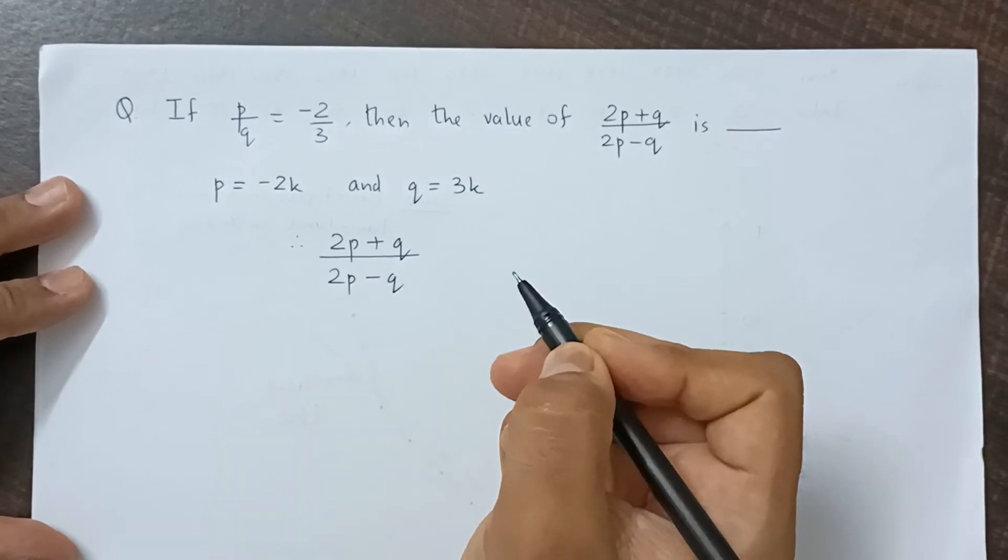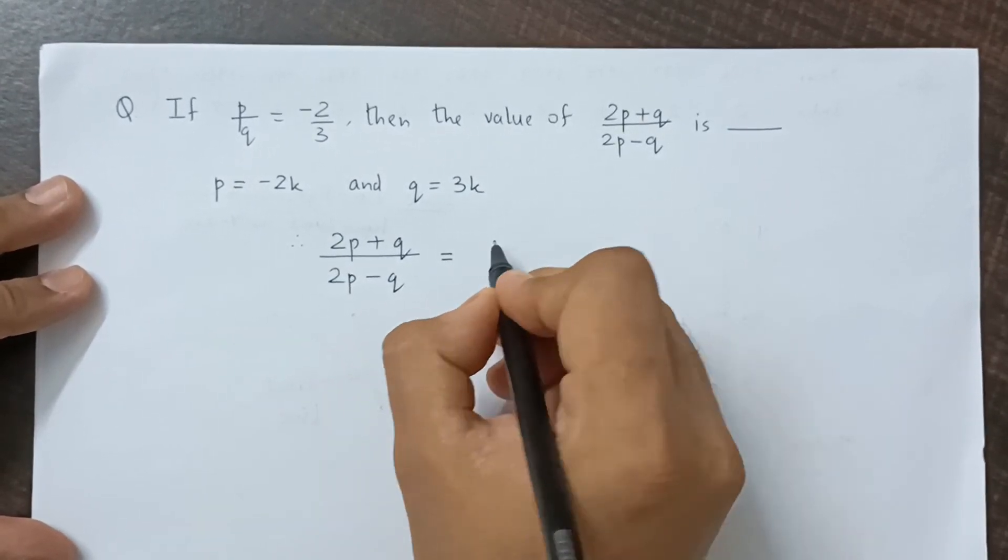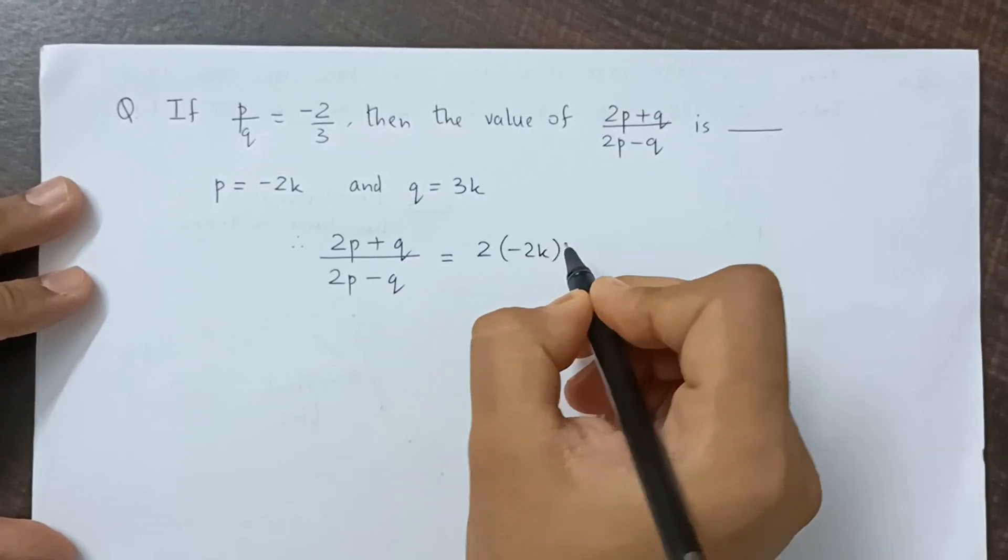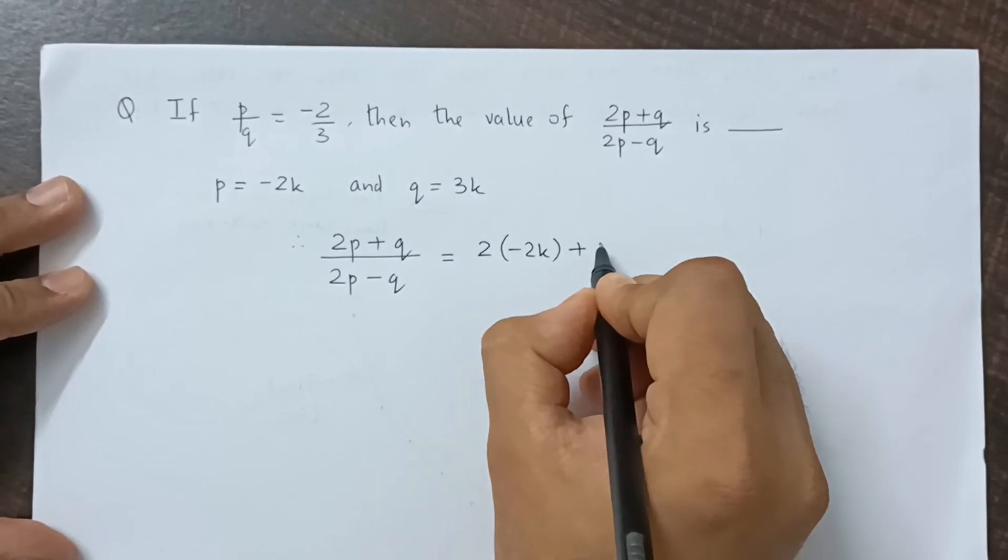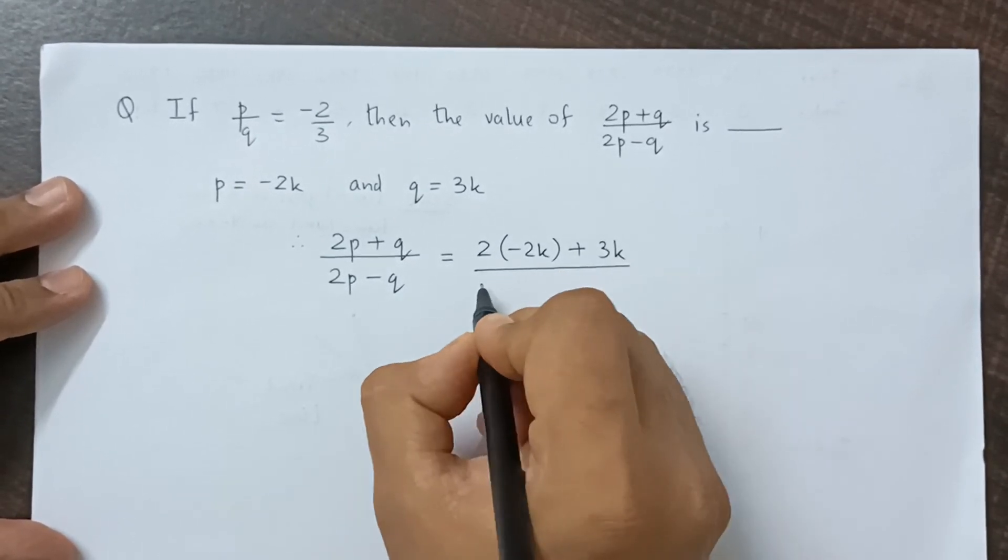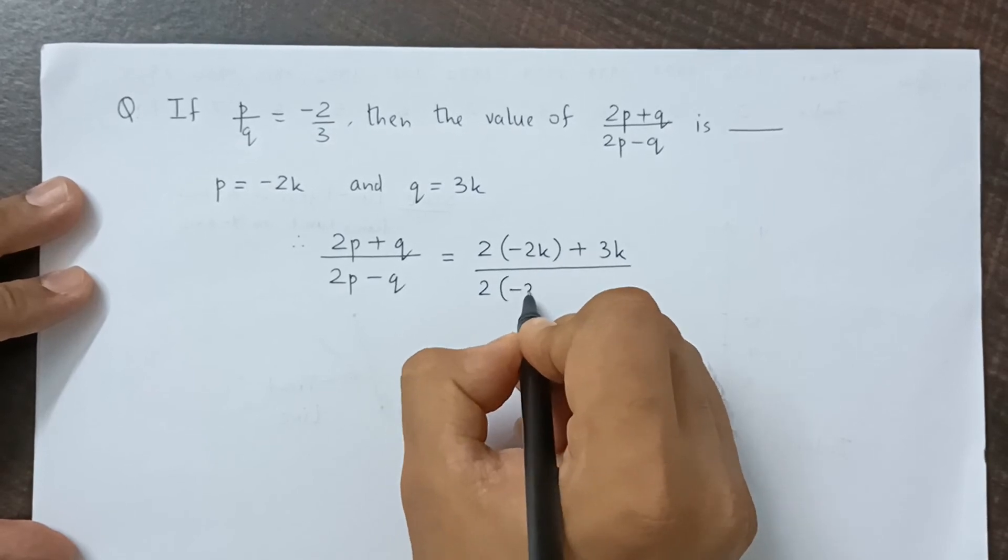Therefore, 2p plus q upon 2p minus q will be equal to 2 times minus 2k plus q—q is 3k—divided by 2 times minus 2k minus 3k.